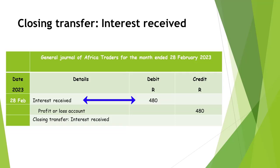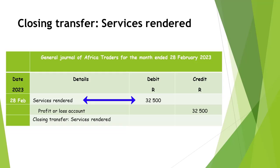Interest received will be debited with R480 and the profit or loss account will be credited with R480. Services rendered will be debited with R32,500 and the profit or loss account will be credited with R32,500.